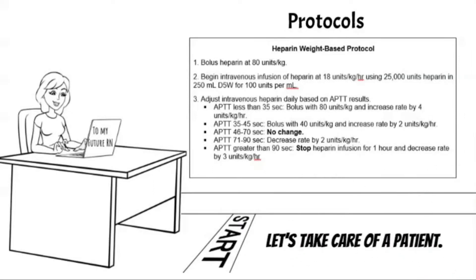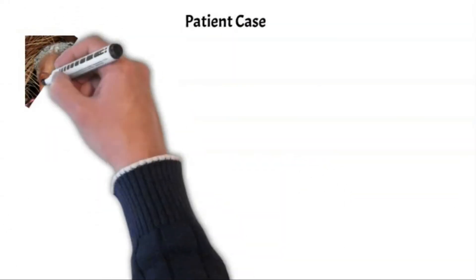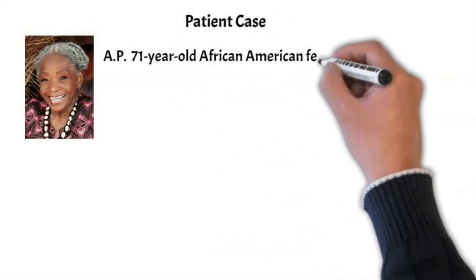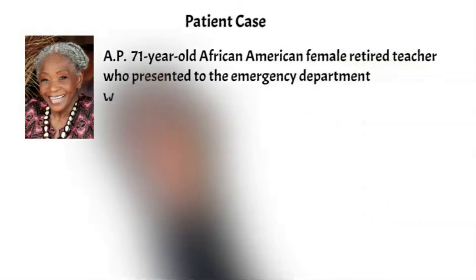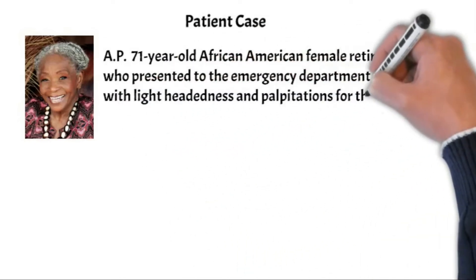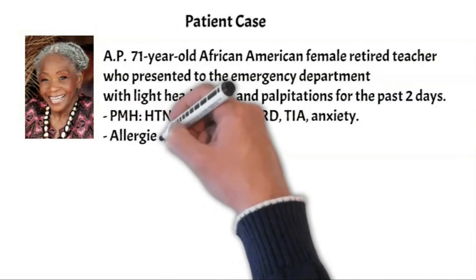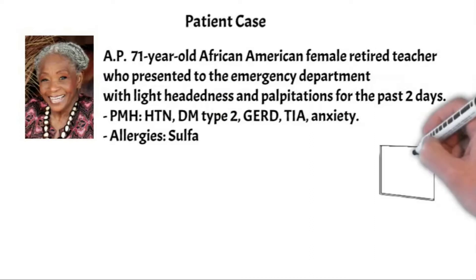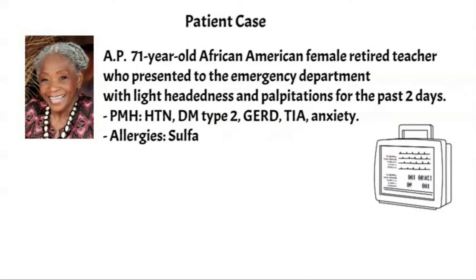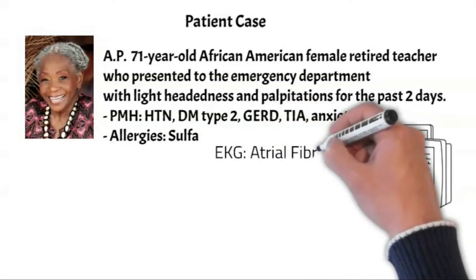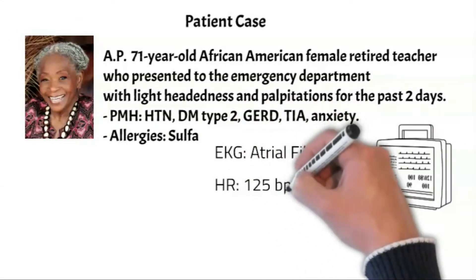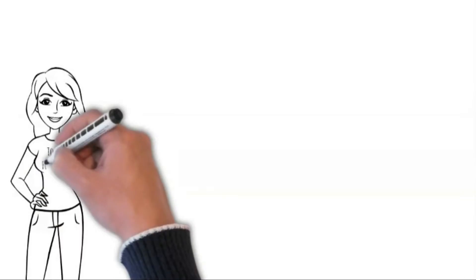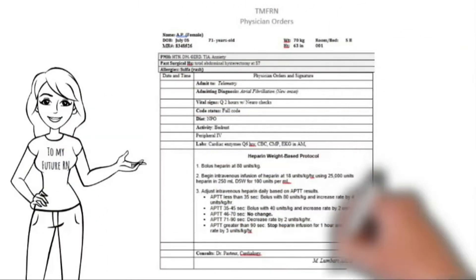AP is a 71-year-old African-American female, a retired teacher. She came into the ER with complaints of lightheadedness and palpitations for the past two days. Past medical history includes hypertension, type 2 diabetes, GERD, prior TIAs, and anxiety. Allergies: sulfa. A 12-lead EKG showed atrial fibrillation at a rate of 125 beats per minute. Admitting diagnosis is new-onset afib. Here are our orders.